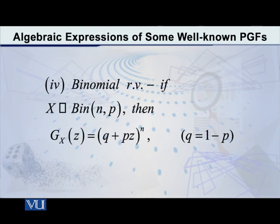After that, let's talk about the binomial random variable, which is the most well-known random variable in the discrete situation. This is the probability generating function that is given by Q plus PZ whole raised to N.